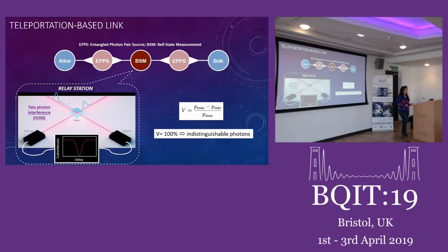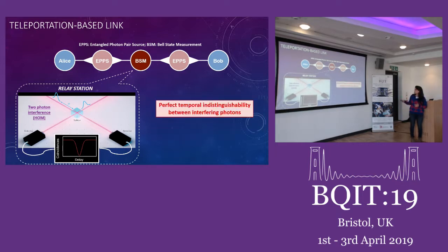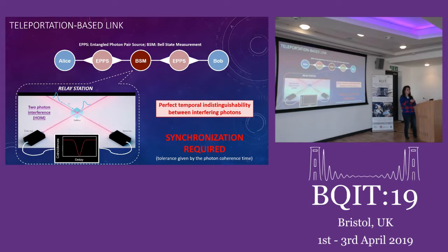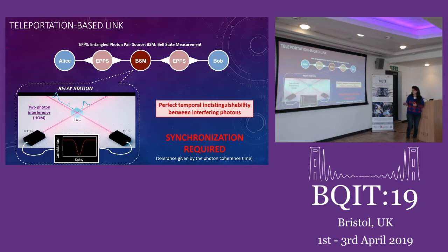When I talk about indistinguishable photons, they must be indistinguishable in polarization, frequency, spatial mode, and also in the temporal degree of freedom. This means the photons must be perfectly synchronized, and the only tolerance I have is given by the coherence time of the photons. To keep transmission rates high, you want short photons — of the order of a picosecond or even less. And this is true for photons coming from very far-away sources, ideally separated by hundreds of kilometers — which is not an easy task.